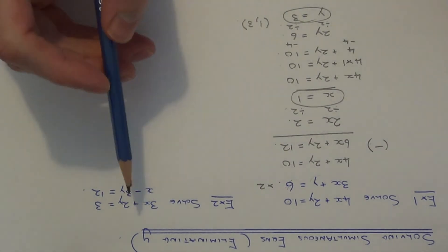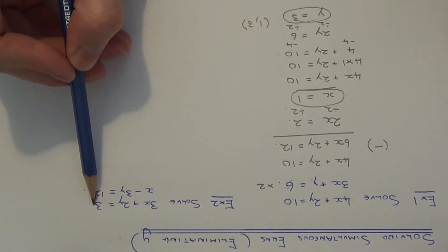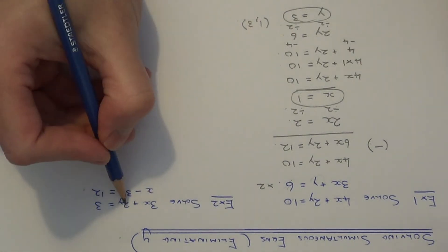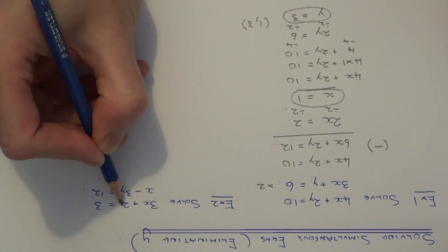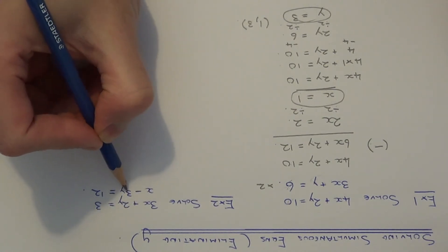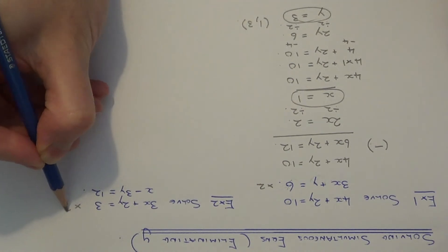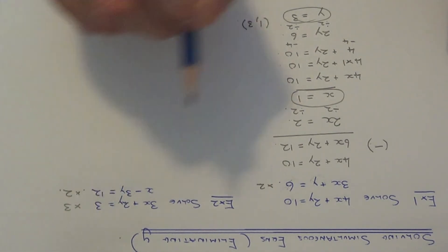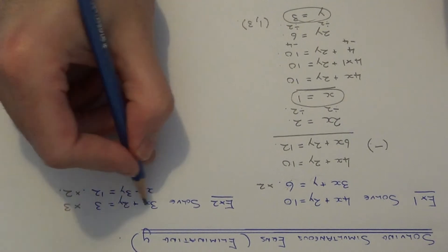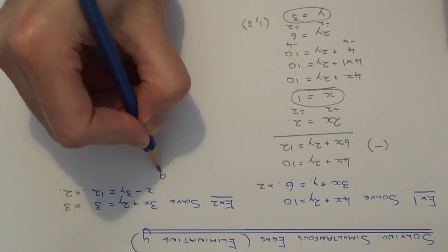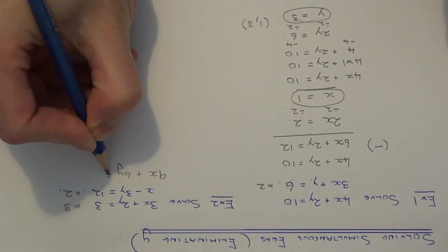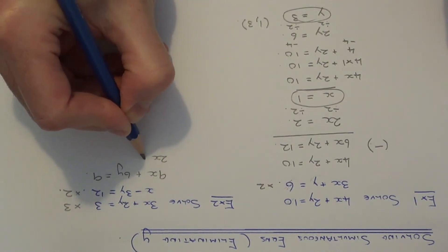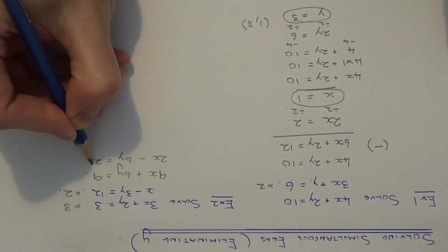Let's move on to example 2. This time we've got 3x plus 2y equals 3 and x minus 3y equals 12. Again we've got to make the numbers before y the same. You can do this by multiplying the first equation by 3 and the second equation by 2, which will give us 6 before both y values. So times the first equation by 3 to get 9x plus 6y equals 9, and times the second equation by 2 to give 2x minus 6y equals 24.